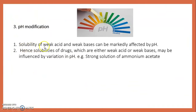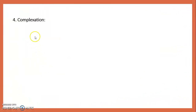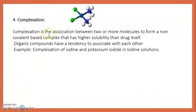In the pH modification method, the solubility of weak acids and weak bases can be markedly affected by pH; hence the solubility of drugs that are either weak acids or weak bases may be influenced by variation in pH. An example is strong solution of ammonium acetate. In complexation, two or more molecules associate to form a non-covalent complex that has higher solubility than the drug itself. Organic compounds tend to associate with each other; an example is complexation of iodine and potassium iodide in iodine solution.